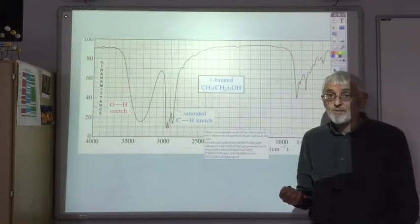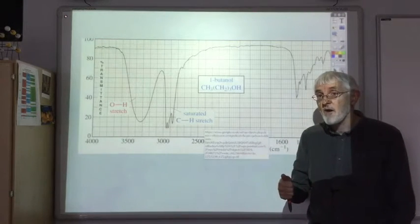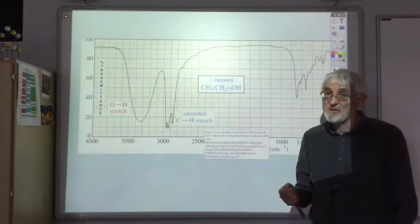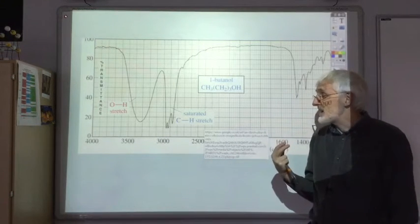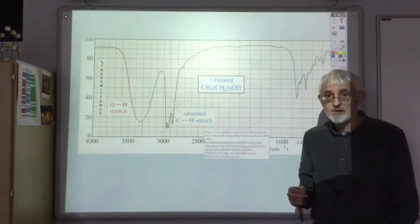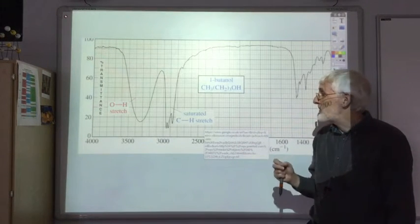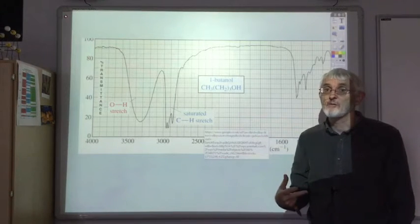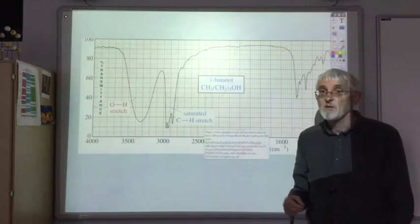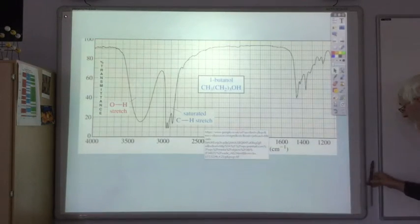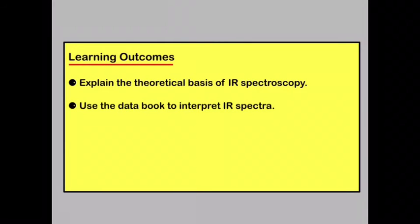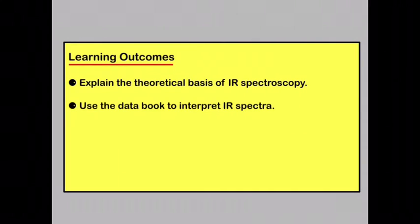So remember the theory of how IR spectroscopy works: absorption of IR light is due to the bending and stretching of certain bonds. Use the spectrum to identify certain functional groups — most commonly the C double bond O group, the carboxyl group, or an OH group, but there could be anything in that table. By now, you should be able to explain the theoretical basis of IR spectroscopy, and use the data booklet to interpret IR spectra.